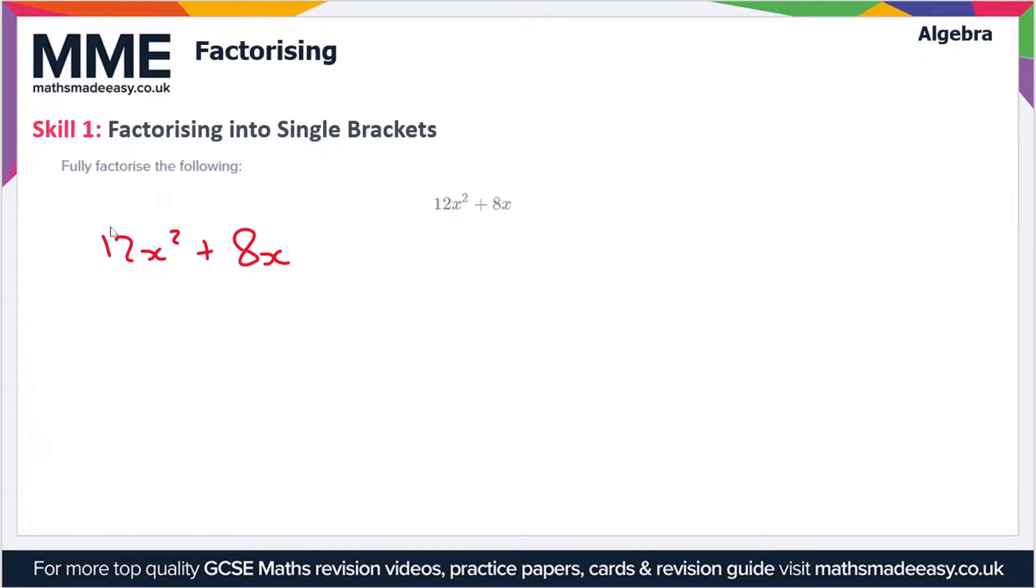We want to fully factorise this expression. To factorise something, we're going to take out any terms or elements which are common to all of the terms. So here we have 12x squared and 8x.